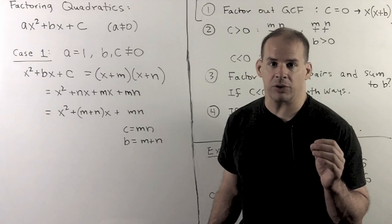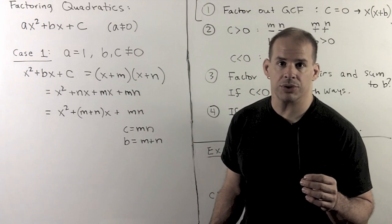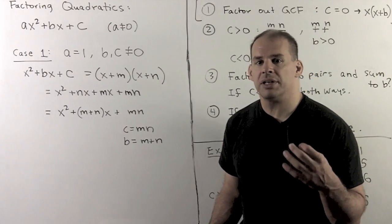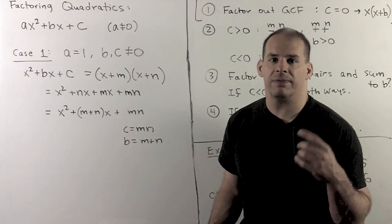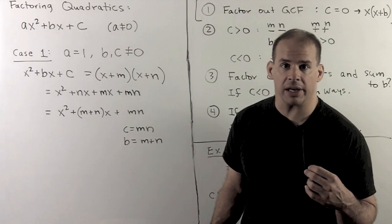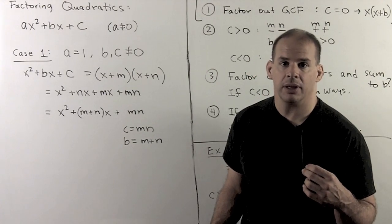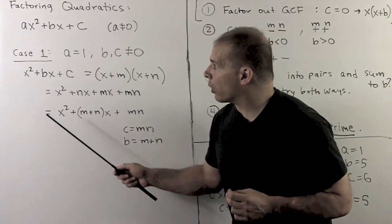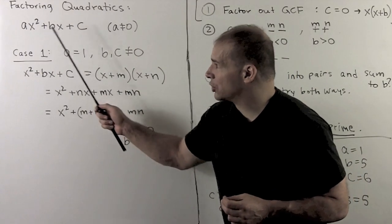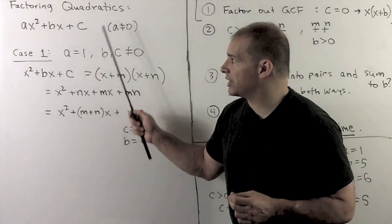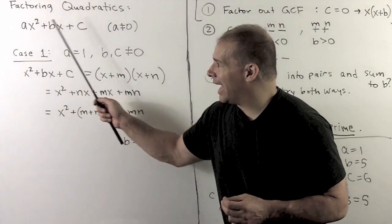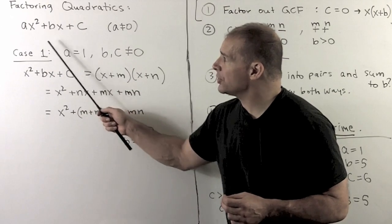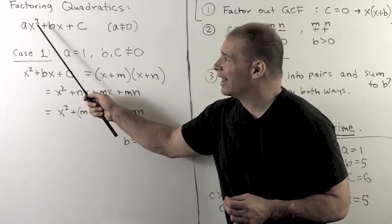We continue with the problem of factoring polynomials. Here we'll only consider the case of factoring quadratics. For us, a quadratic polynomial is going to be in the form x squared plus bx plus c, where a, b, and c are integers. We'll have a single variable, say x.